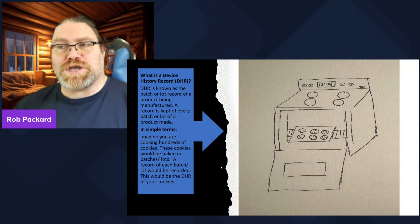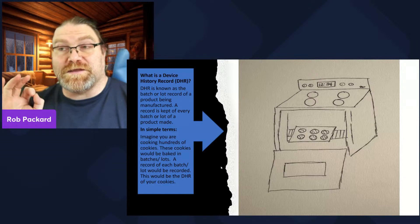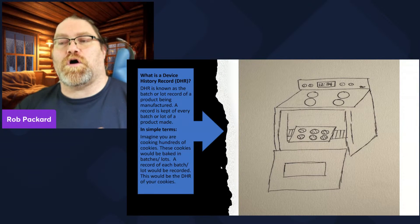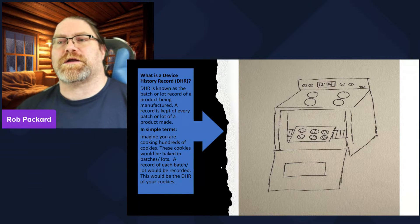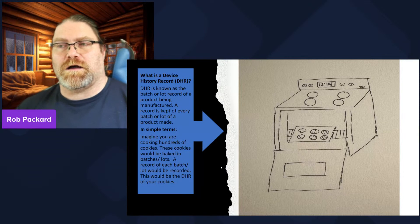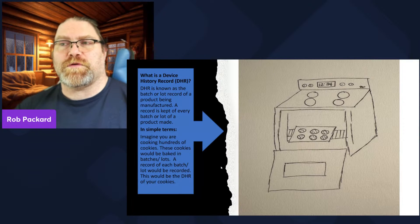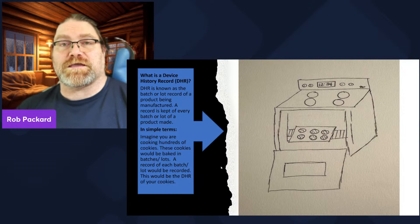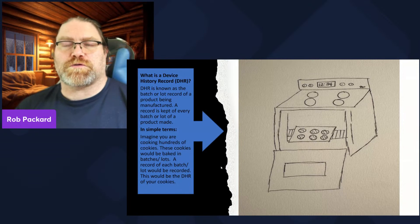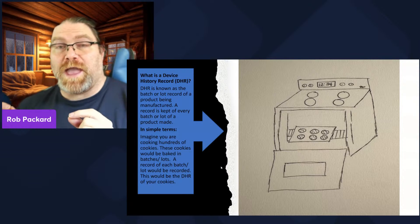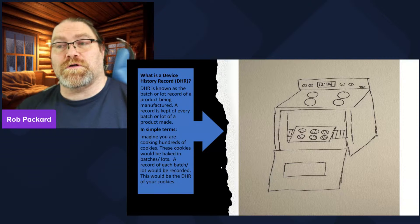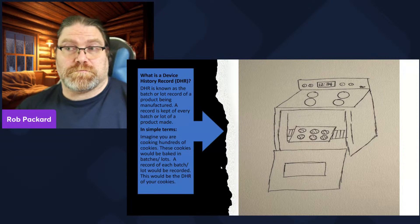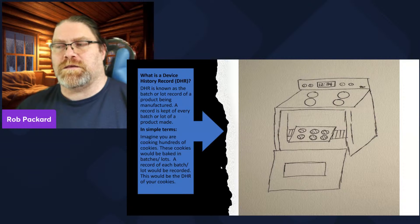The device history record — or DHR — is also called your batch record or your lot record. Some people call it a lot history record, some call it a batch record, some call it a lot record. I would much rather call it a batch record or lot record — I think the acronym confuses people. If you have a single unit, for implants or serialized electromedical devices, you might call it a serial number record.